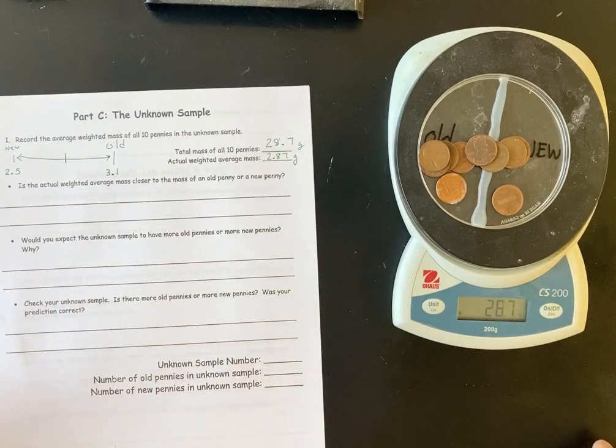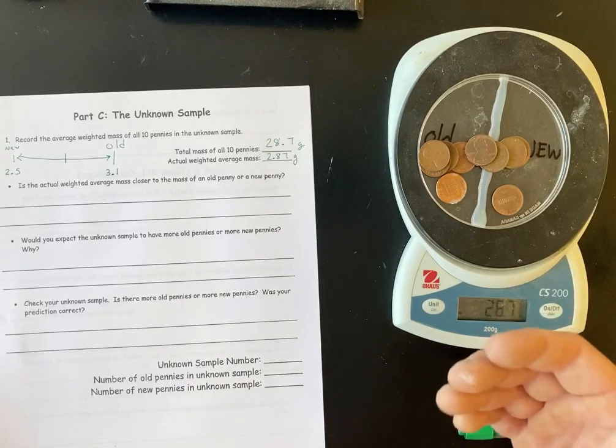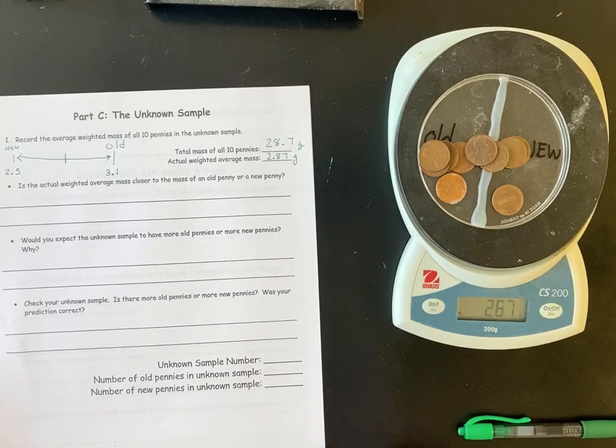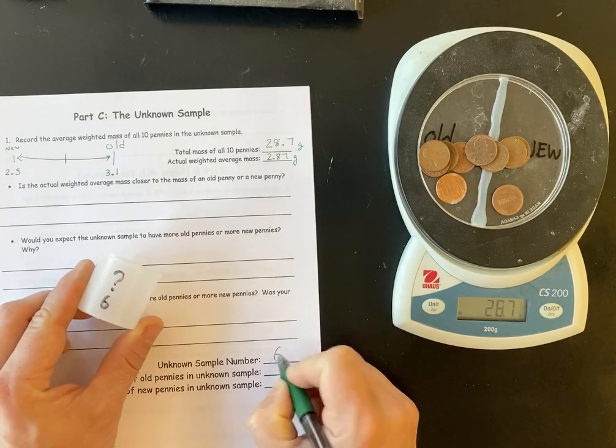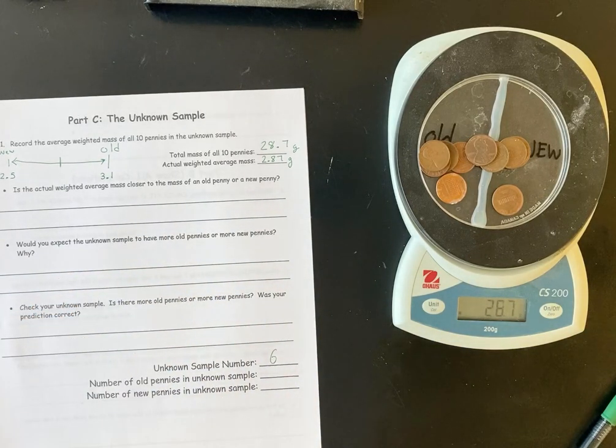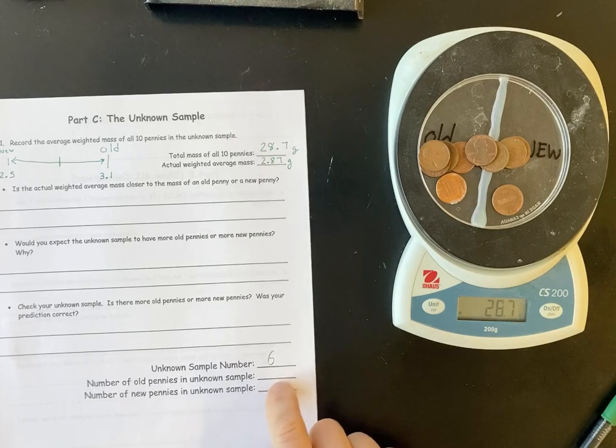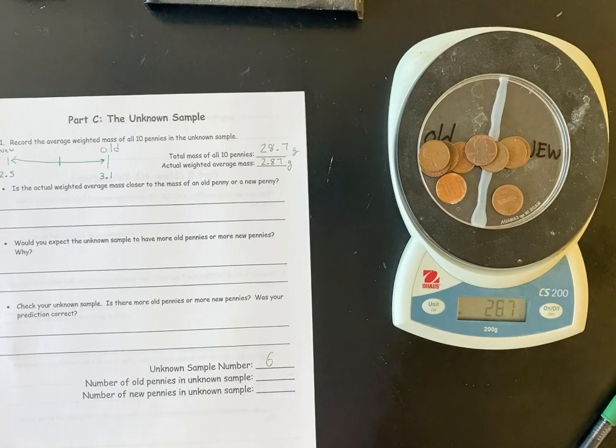And so the next thing you're going to do is you're actually going to count them out and check the dates on these. I will attach a picture of these pennies, an up close picture so that you can look through them and zoom in and check the dates and see if you're correct. And then at the bottom, the unknown sample number is six. And I'm not going to tell you, you're going to fill in the number of old and the number of new to see if you were correct once you do the counting. And that's it for this lab.